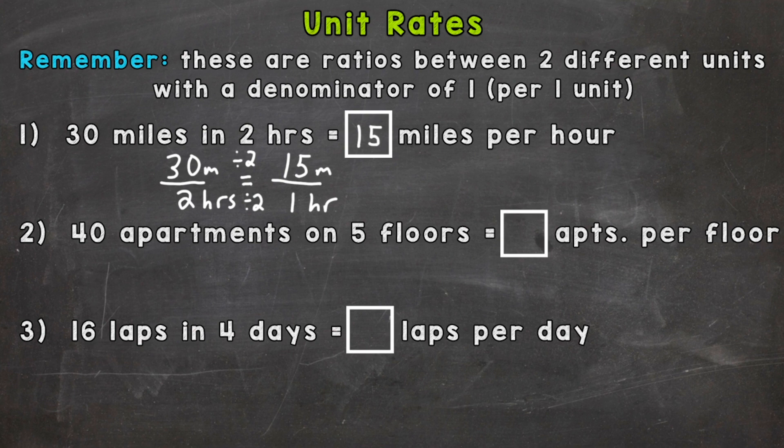Number 2: 40 apartments on 5 floors. So we want to find how many apartments per floor. So again, let's set it up as a fraction. 40 apartments on 5 floors. So we need to find out how many apartments per one floor.